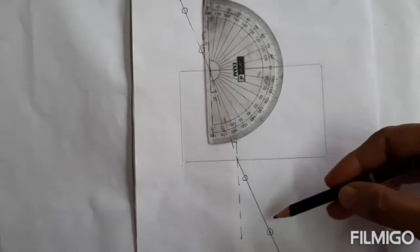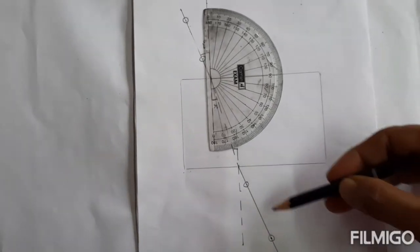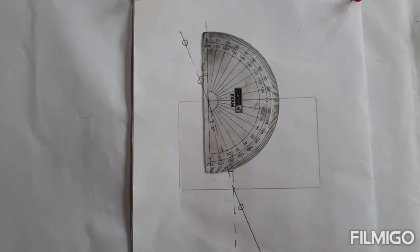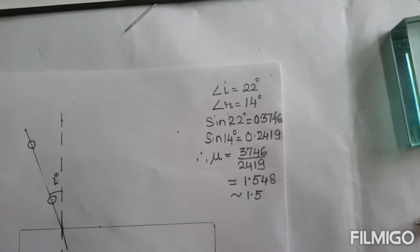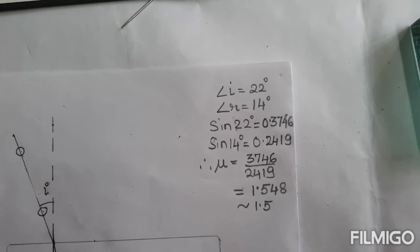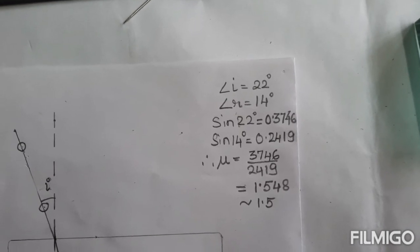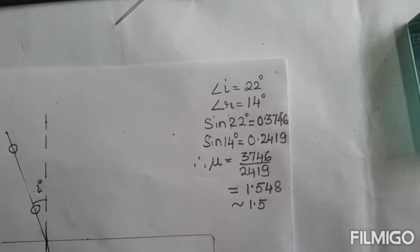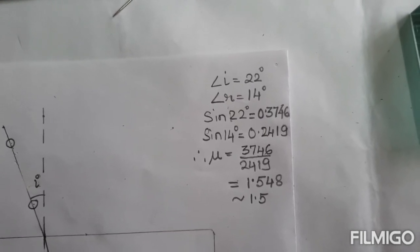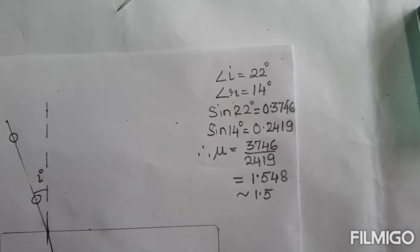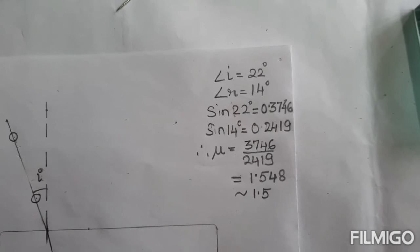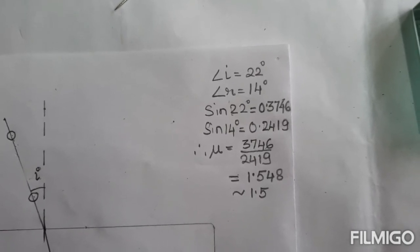See the mark of the pins, pins are rounded, so these are the pin marks. Now calculation: sine I, that is sine 22 degrees, is coming to 0.3746. Sine 14 degrees is coming to 0.2419. Therefore we can calculate mu, that is coming to 1.548, which is almost equal to 1.5, that is the refractive index of glass.